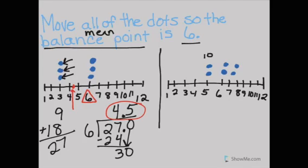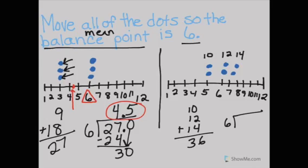So if I have two on top of five, I know I have ten. I have two dots above six, so that's twelve. Two dots above seven is fourteen. I can add those up and get thirty-six. Divide thirty-six by the number of numbers and I get six, so my balance point is six.